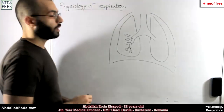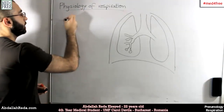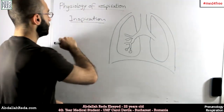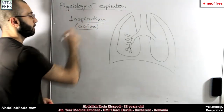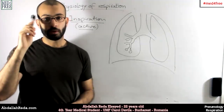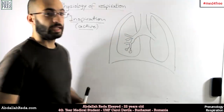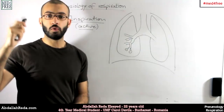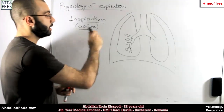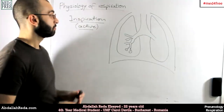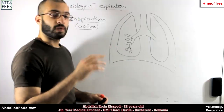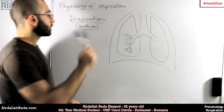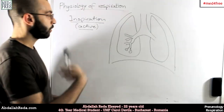The first part of the process of respiration is inhalation or inspiration. We have to know that inspiration is an active process. What does active here mean? It means that it's controlled — controlled by the brain. We have a center of respiration in the medulla. This center will send orders to certain muscles to contract, and this will lead to the process of respiration taking place.